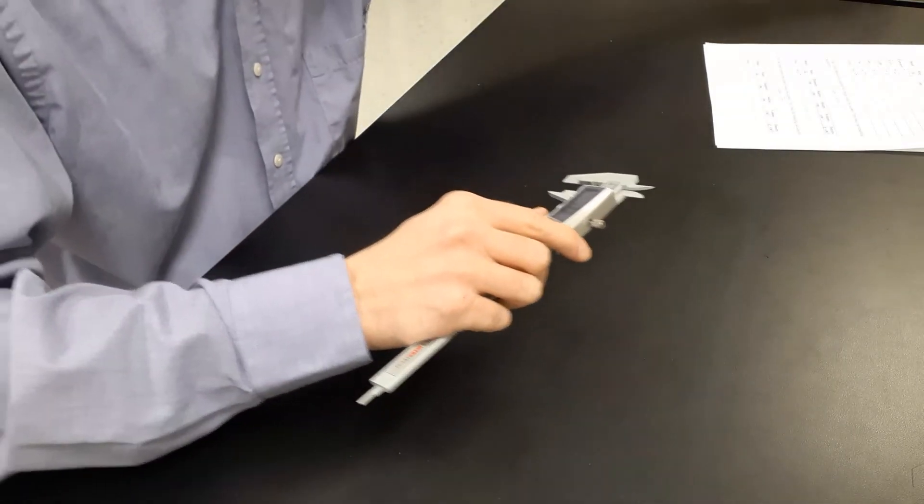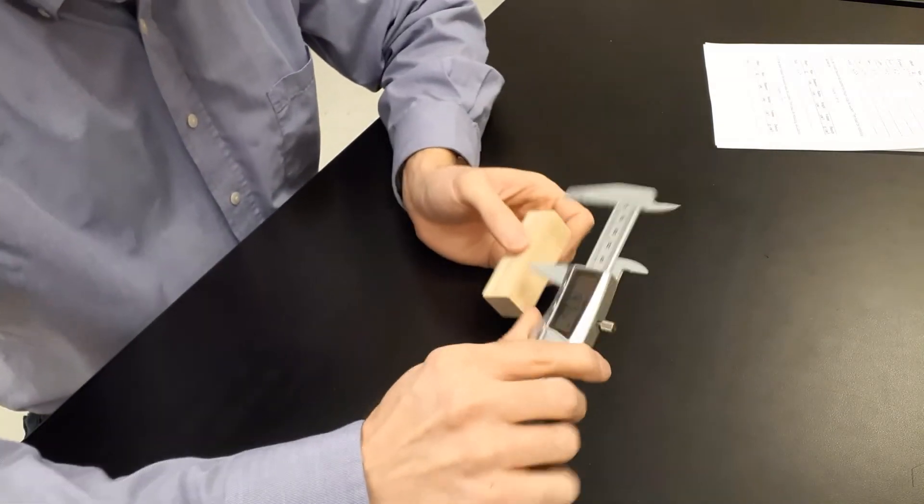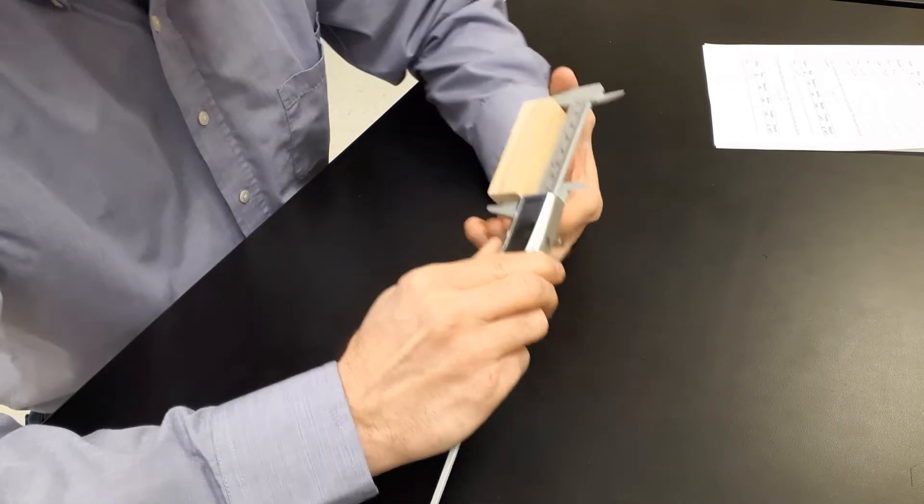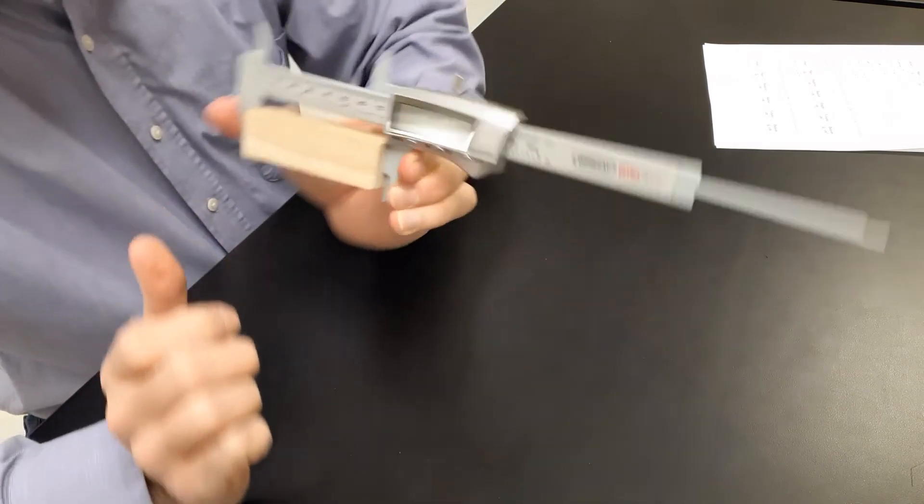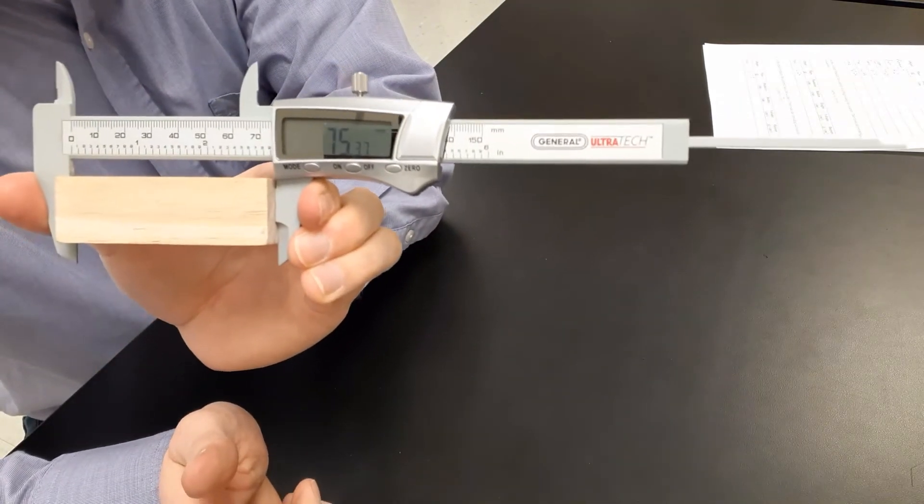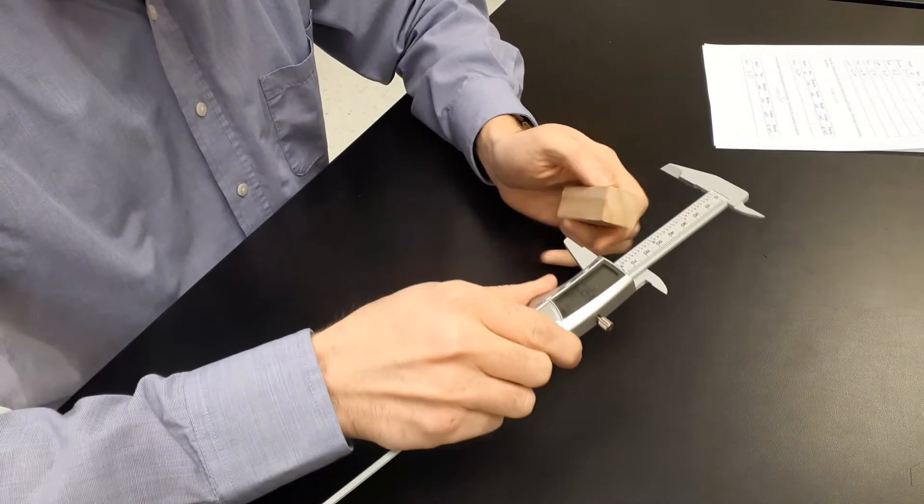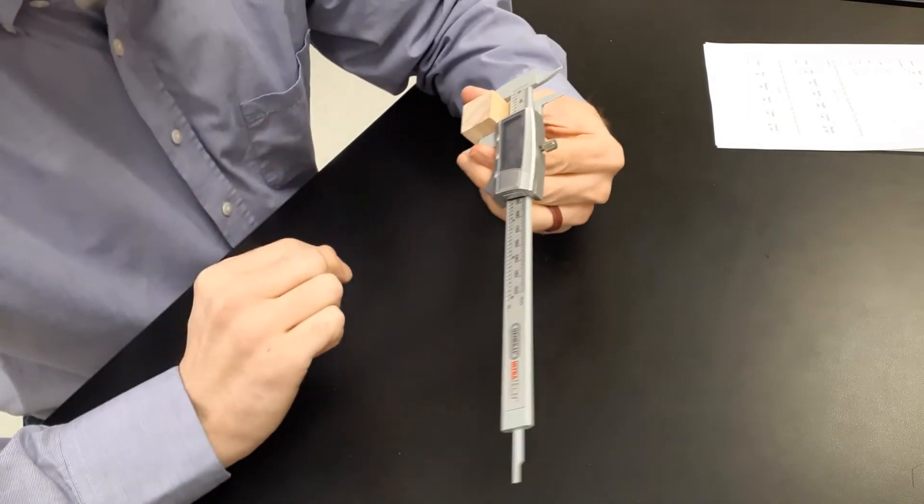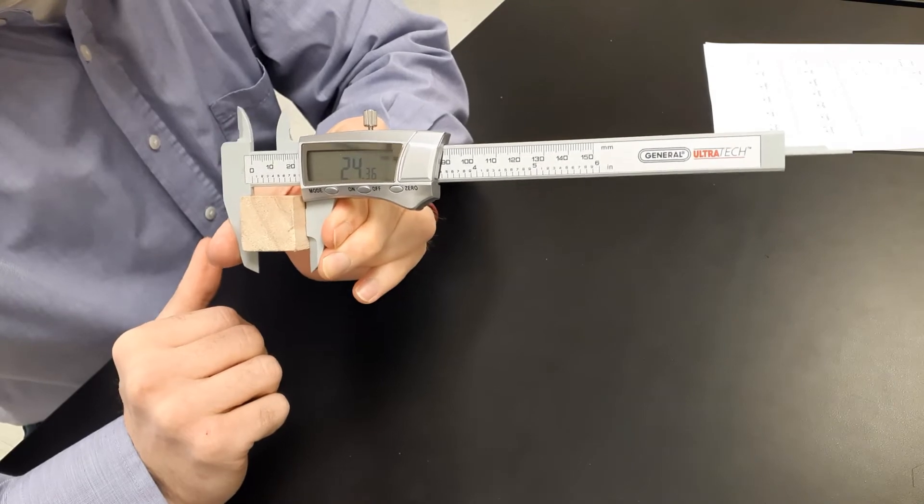All right, so we're done with that. And then the last cubic object is we're going to take our block of wood here. So let me get this longest measurement first. Get it in here. Well, 75.36 millimeters, 75.36 millimeters. Make my other two measurements, 24.36 millimeters, 24.36.